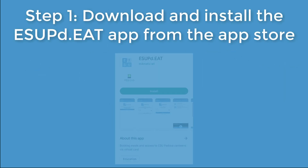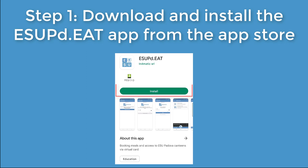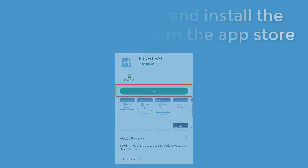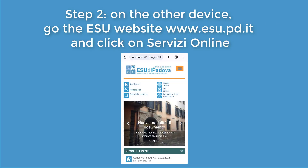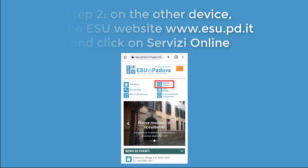Download and install the asopd.it app from your app store. On the other device — PC, tablet, or other smartphone — go to the asopd.it website and click on Servizi online.